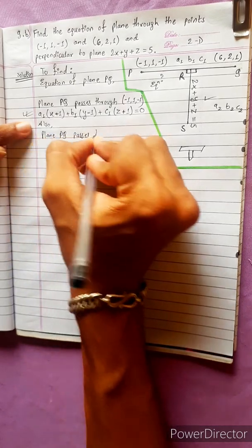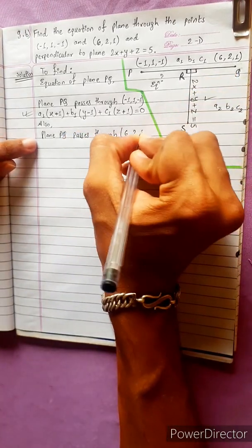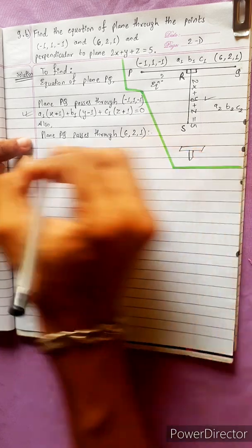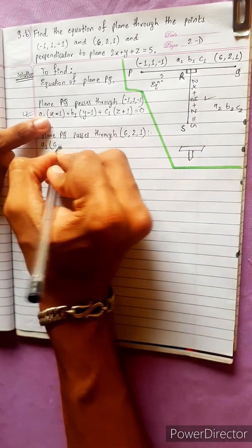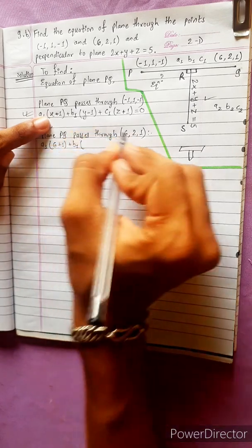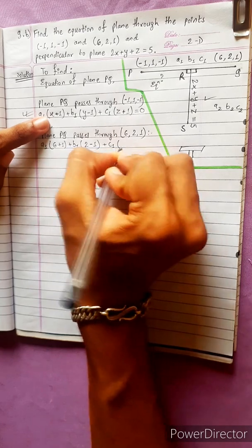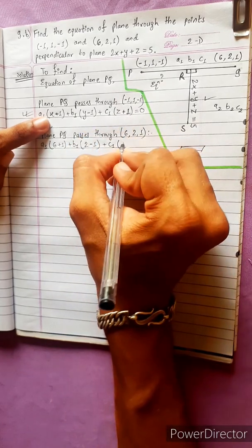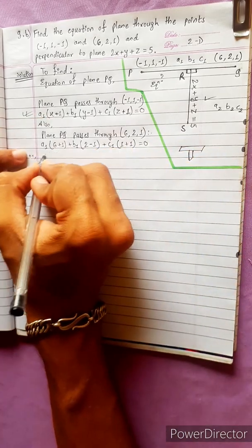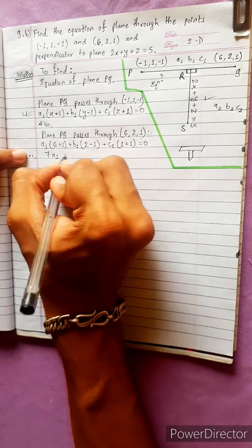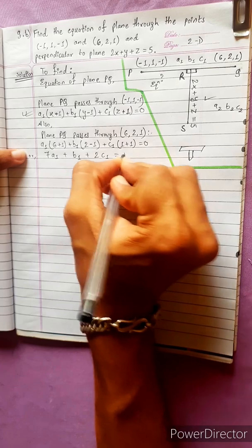Plane PQ also passes through the point (6, 2, 1). Substituting into the equation: A1 times (6 minus 1) plus B1 times (2 minus 1) plus C1 times (1 minus (−1)) equals zero, giving us 7A1 plus 2B1 plus 2C1 equals zero. This is equation 1.